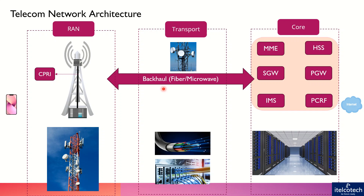Until 4G technology we have seen this is a single backhaul, but going forward we are seeing a disaggregation — it is being disaggregated between a mid-haul and a front-haul. The backhaul is essentially the medium through which information is carried — it could be fiber, it could be microwave technology which uses circular antennas, or it could be satellite, though satellite is not widely used currently in telecom.